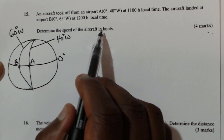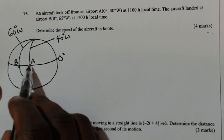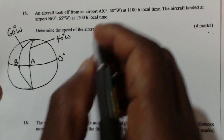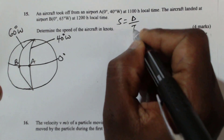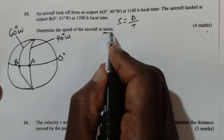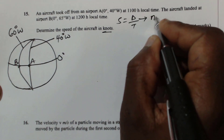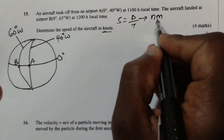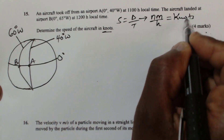Determine the speed of the aircraft in knots. To get the speed, remember: speed is given by distance divided by time taken. Since we are required to get the speed in knots, we shall need the distance in nautical miles. When you use the distance in nautical miles divided by the time in hours, that is when you get the speed in knots.